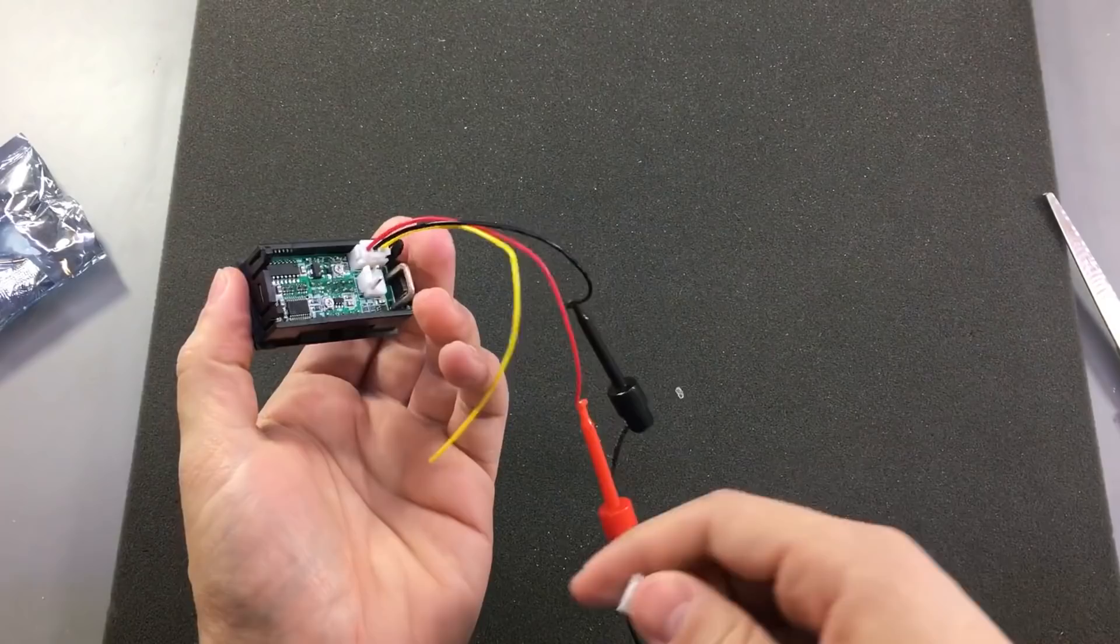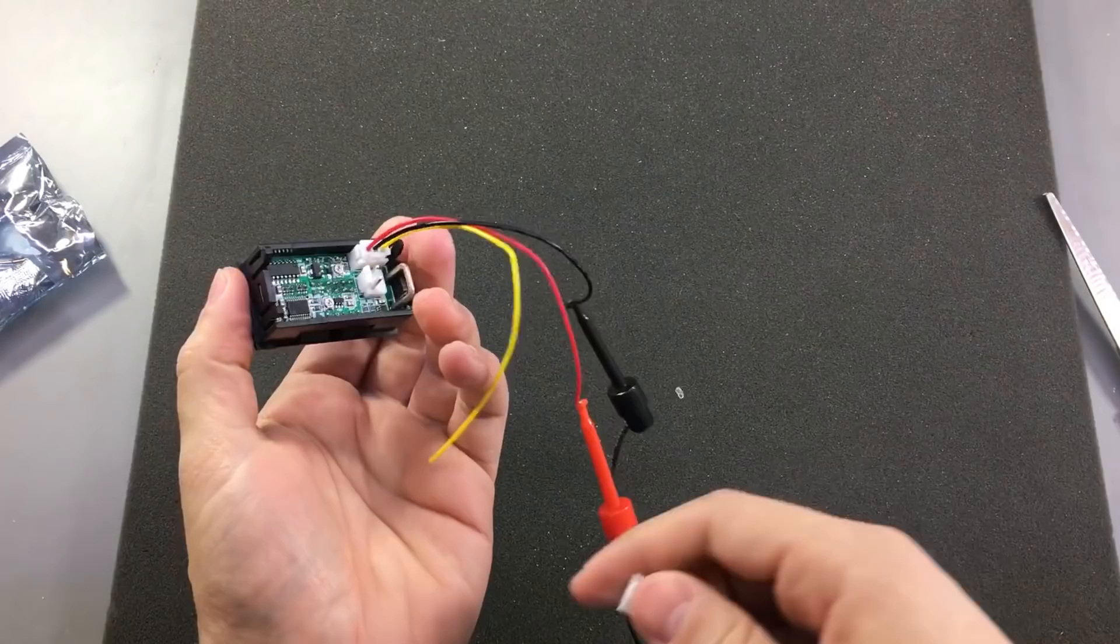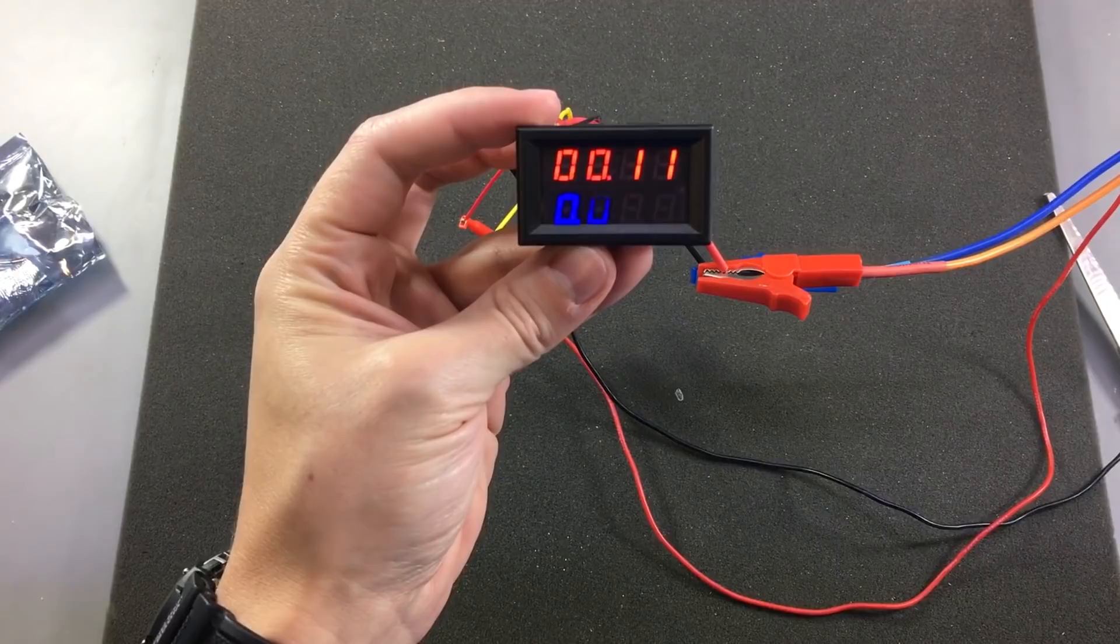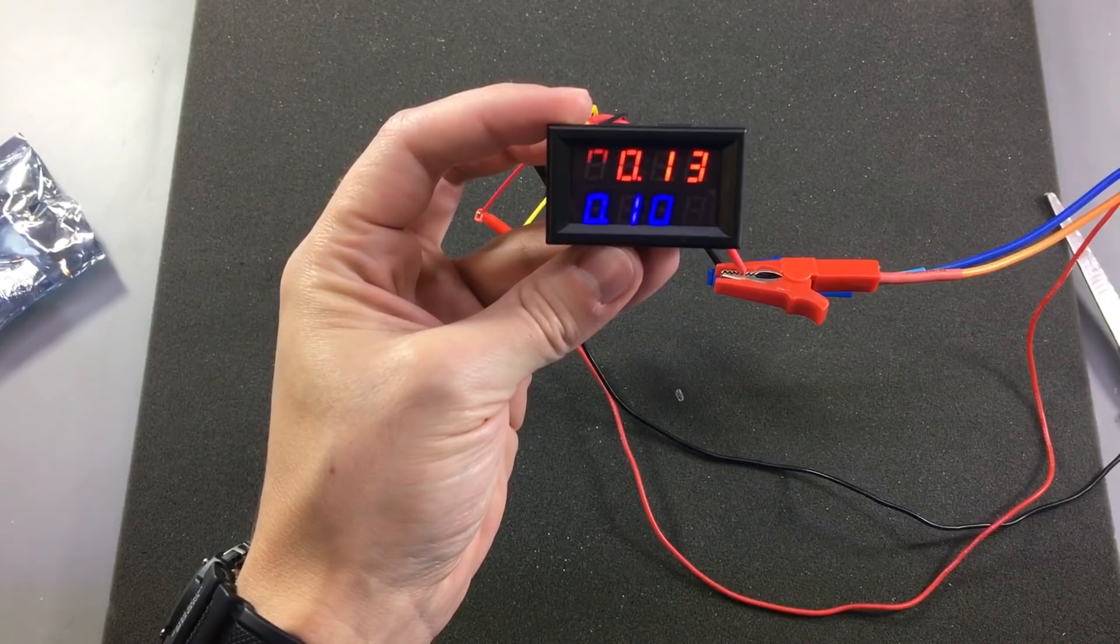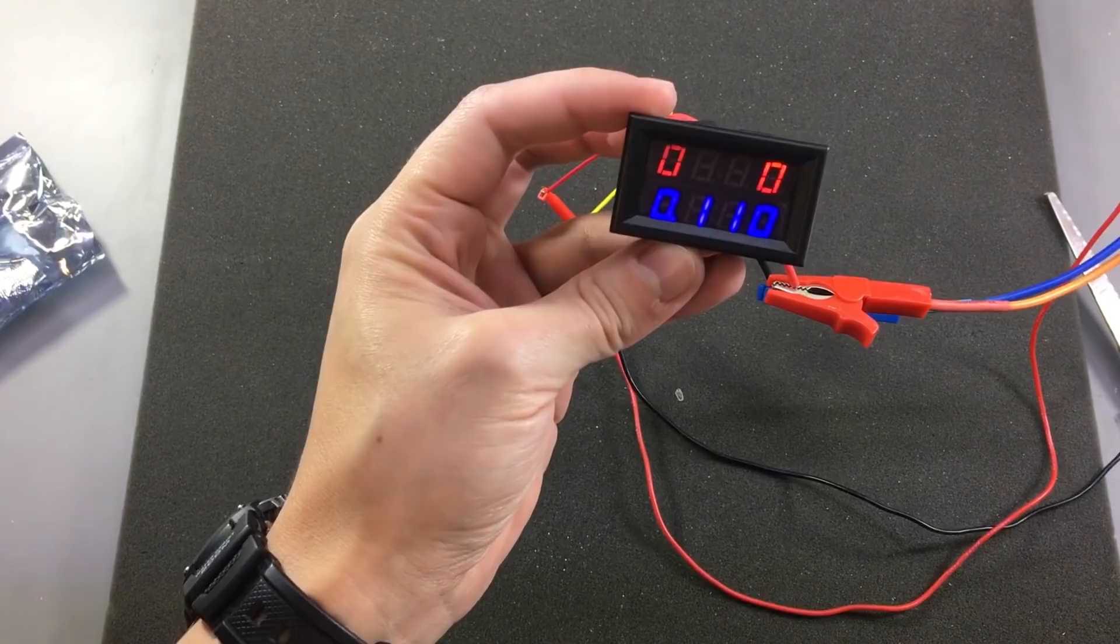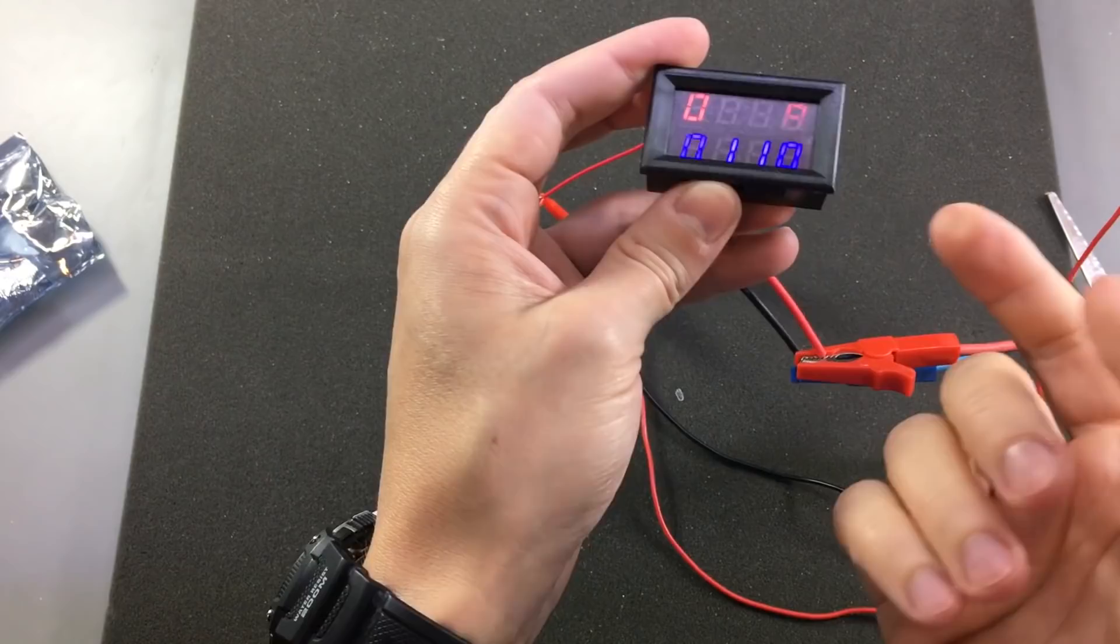Now let's also test the ammeter and see if we're getting 1 mA resolution. And indeed we are getting 1 mA resolution. Let me try to increase this in steps of 1 mA. Let's see if we get any response here. Yep, it seems like we are getting 1 mA resolution, which is great. I mean this could be a great panel meter for a power supply. And the cost is just $4 with free shipping, which is not bad at all.